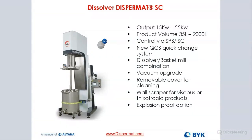Here is a picture of the SC — we have that in different sizes. The quick change system is an option, giving you the combination dissolver/basket mill. There's also the ability to upgrade to a vacuum system. Some people prefer vacuum, especially when working with adhesives or products where it's difficult to transfer the product from one container to another when you're done dispersing.